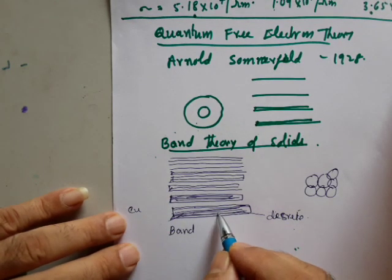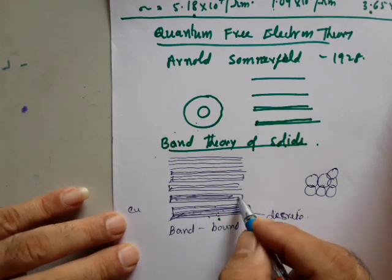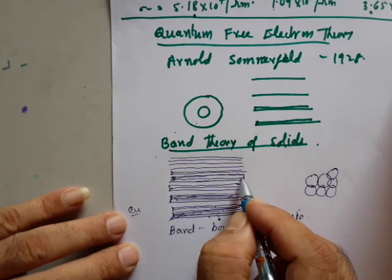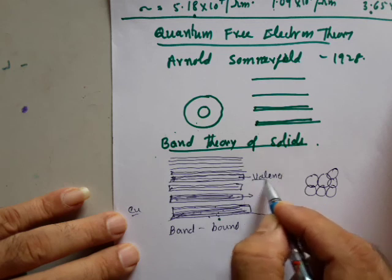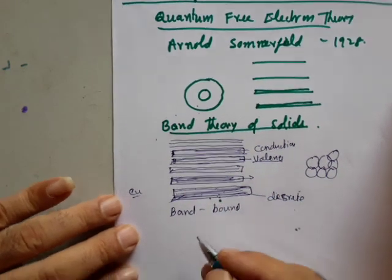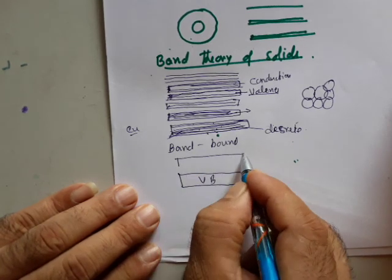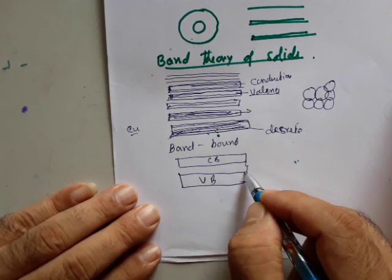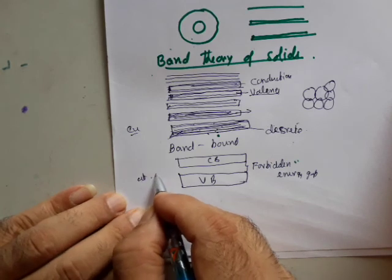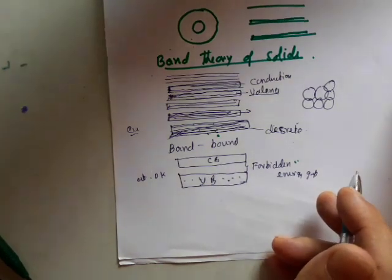Taking the example of copper: in the ground state there are two electrons, so all those bands are filled — these are bound bands with no free electrons. The topmost band is what is represented as the valence band, and the band just above it is called the conduction band. There is a small gap between them — the forbidden energy gap. At absolute zero Kelvin, electrons are present in the valence band but there are no electrons in the conduction band. Hence, there is no conductivity at absolute zero Kelvin. At higher temperature, electrons can jump to higher energy levels.